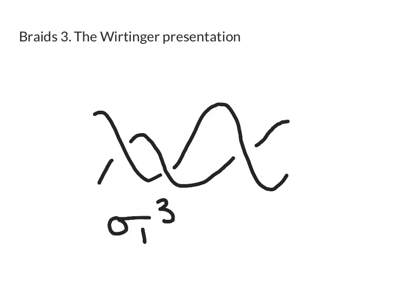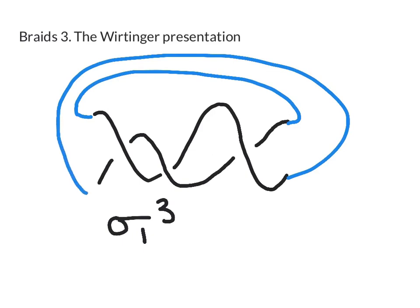So if I give you a braid like this there's always a way to turn it into a knot in the three-dimensional space. So what you do is you cap it off using these blue strands like this. Okay and this is called the braid closure of the braid we started with. Alright so if I trace this all the way around now I get a knot which in this case is the trefoil knot.